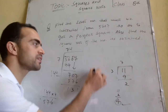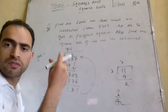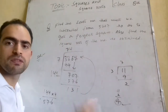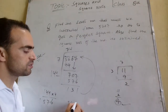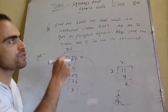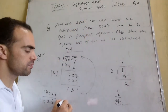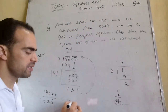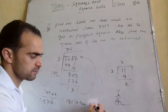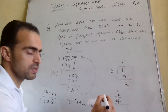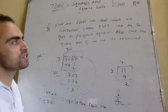The remainder 131 is extra, meaning it is left over and must be subtracted from the given number to produce a perfect square. Therefore, 131 is the least number that must be subtracted from the given number.